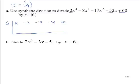Alright, so how the process starts is we take the first coefficient and we just drop it down. Now we repeatedly multiply and add, multiply and add.